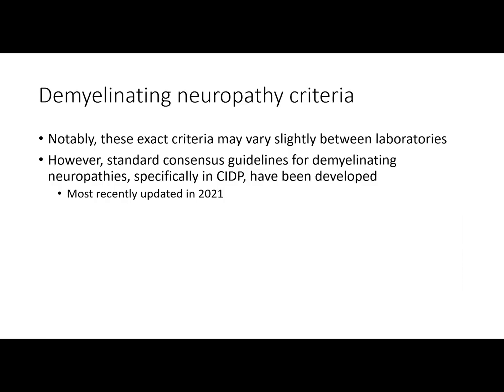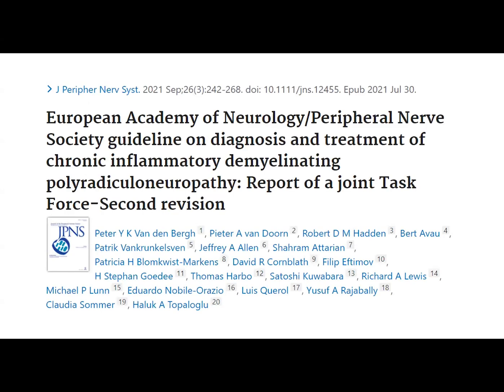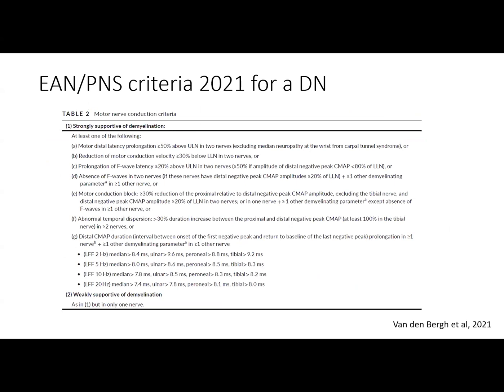Notably, these exact criteria may vary slightly between laboratories. However, standard consensus guidelines for demyelinating neuropathies, and specifically for CIDP, have been developed, most recently updated in 2021. This article — the European Academy of Neurology and Peripheral Nerve Society Guidelines on the Diagnosis and Treatment of CIDP — is encouraged reading. A table from this article lists the motor nerve conduction criteria that can be seen in demyelinating neuropathies, and as you can see, they are very similar to what we just discussed.